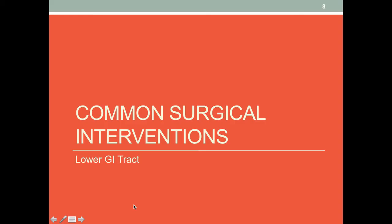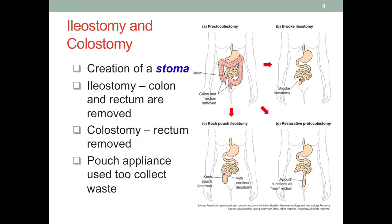Our next topic covers common surgical interventions that occur in the intestine. We have the small intestine and the large intestine or colon, so here we see ileostomy and colostomy. In ileostomy, 'ileo' refers to the ileum, so this is a surgery that affects the ileum. The suffix '-ostomy' means the creation of a stoma or an opening.